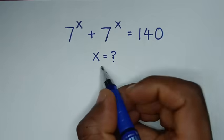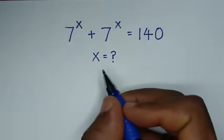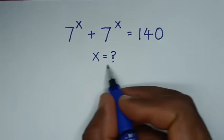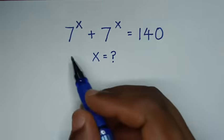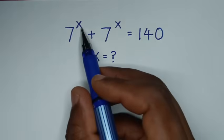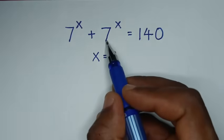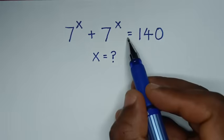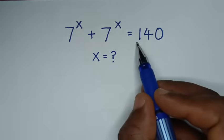Hello, you are welcome to solve this math problem, which is 7 power of x plus 7 power of x is equal to 140.